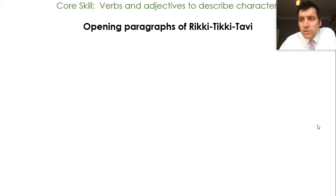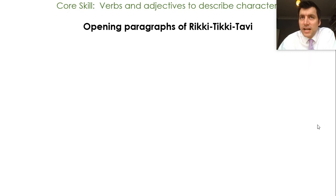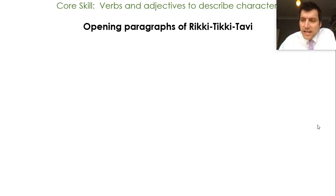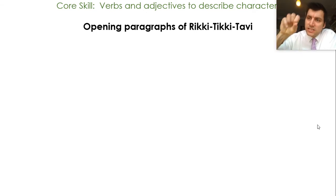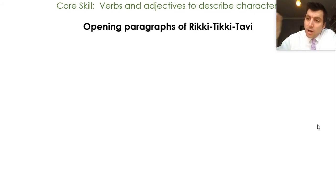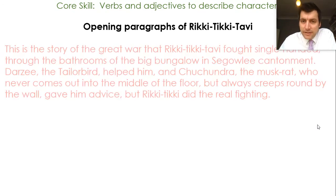We're going to look then at Rikki-Tikki-Tavi. I'm going to read two paragraphs from it. Then we're going to unpick some vocabulary relating to it. You're going to do a task looking at that piece of vocabulary, and I'll talk to you about it first. And secondly, you're going to read the rest of the passage, really think about how it's written, and unpick the whole short story as your final task.